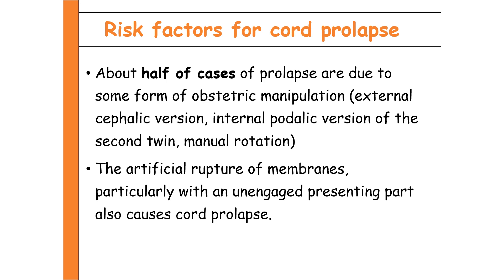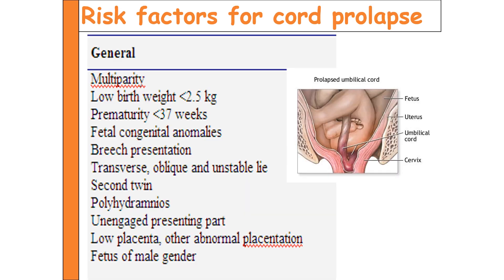Risk factors include obstetrical manipulation: external cephalic version, internal podalic version, and manual rotation of the baby all carry a chance of cord prolapse. Performing artificial rupture of the membrane — especially if the presenting part is not engaged — may also produce cord prolapse.